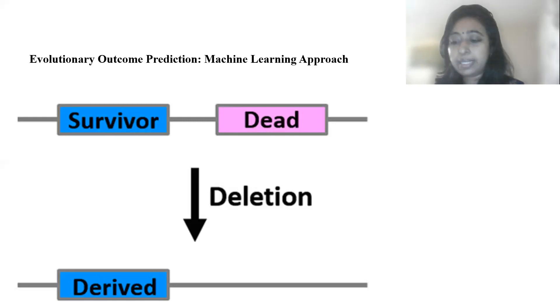In particular, my goal is to predict the rates and properties of gene deletion. From the figure, we can see we have two genes, survivor and dead, and after deletion, we have only one gene, which is the derived one, and this derived gene is very similar to the survivor one, and my research is to predict those things.